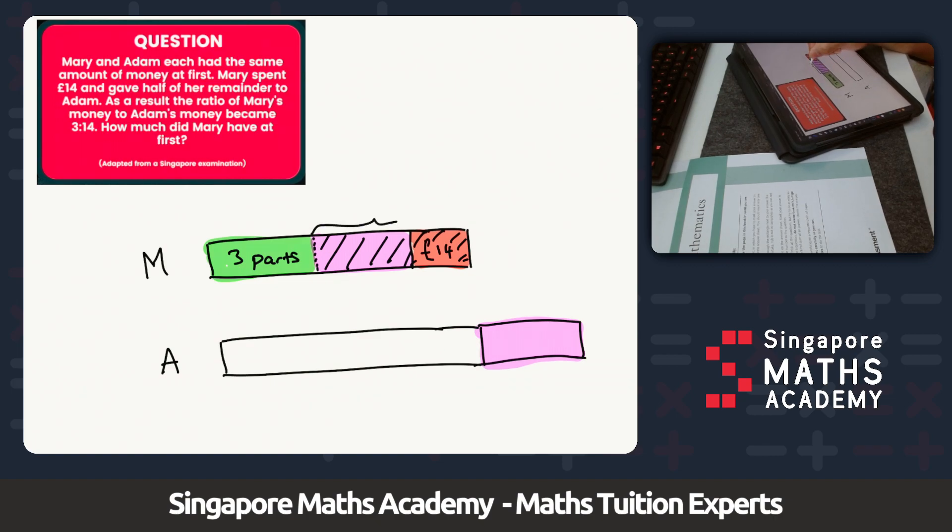With that in mind, if we think about it, that represented half the remainder and that must mean that this is the other half of the remainder, that must also equal three parts. And because this was moved here, this must also be three parts.